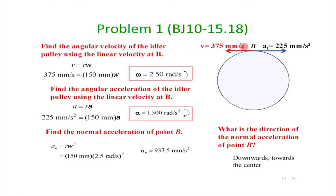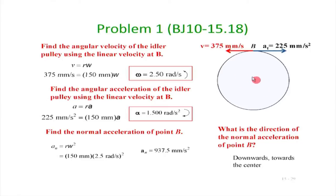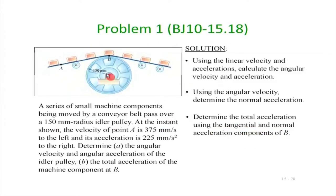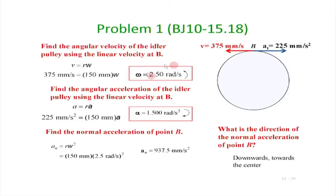So 375 millimeters per second is the velocity and 225 millimeters per second squared is the acceleration at point B, because point B is common to the belt and the idler pulley, and in this mechanism we assume there is no loss of contact between the belt and the pulley. What we know is that this pulley will undergo some angular acceleration about its center, and as a result omega times r will be the corresponding velocity.